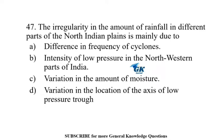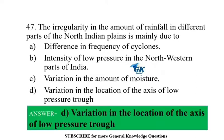The irregularity in the amount of rainfall in different parts of the North Indian Plains is mainly due to variation in the location of the axis of the low-pressure trough.